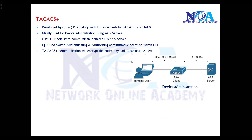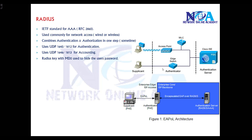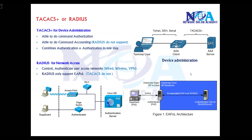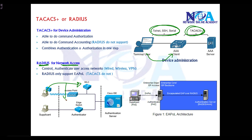These are the two protocols commonly used between the Triple A client and the authentication server. The key question is: which protocol do I use? For device administration — if using Telnet or SSH — we commonly use TACACS+. For network access, when a user wants to connect to the network and must be authenticated, we use RADIUS.